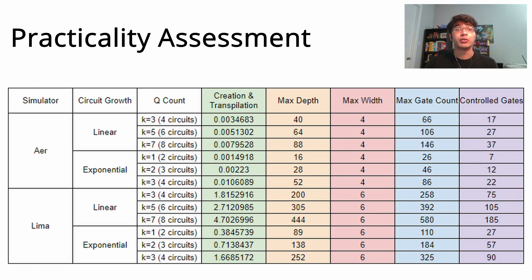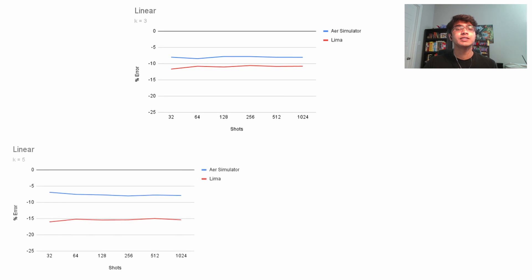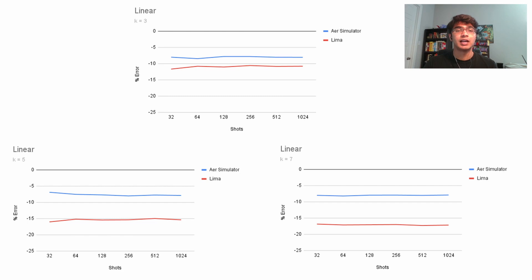After running our algorithm on both the AER and the LEMA, we created these graphs. Here you can see that for the linear implementation, the AER is accurate over 90% of the time, even as we scale up. But the LEMA simulator gets worse as the number of iterations increases.